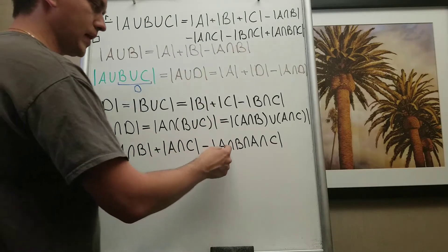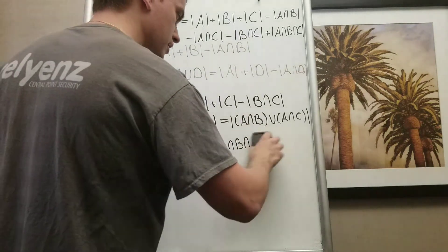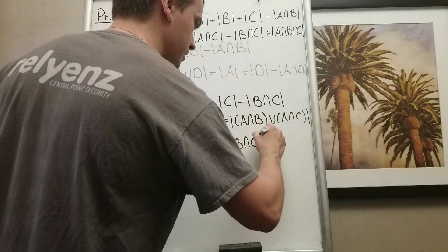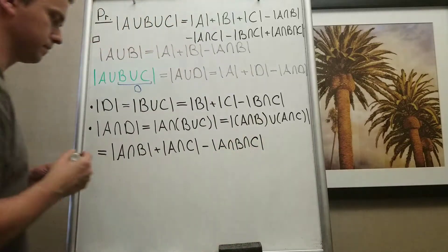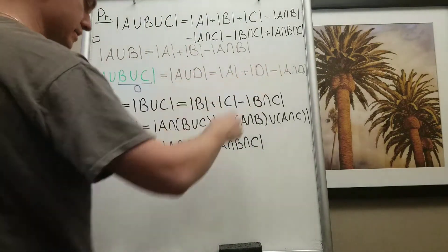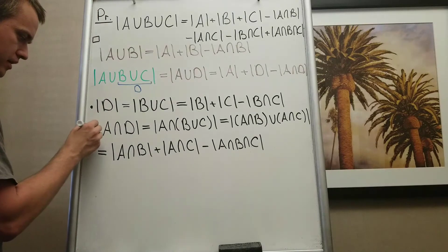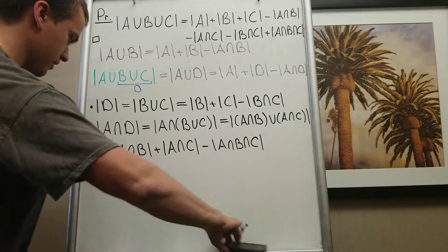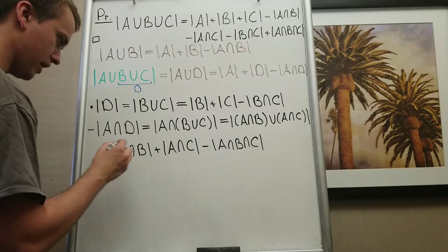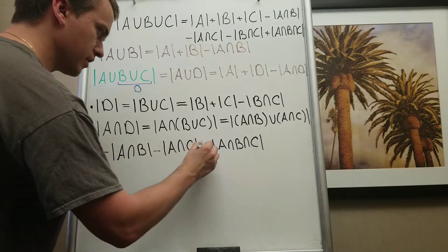Since A ∩ A = A, the last term simplifies to |A ∩ B ∩ C|. Because of the minus sign in front of |A ∩ D|, the signs of these terms will flip: the − |A ∩ B| and − |A ∩ C| terms become negative, and the − |A ∩ B ∩ C| becomes positive.